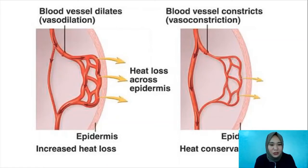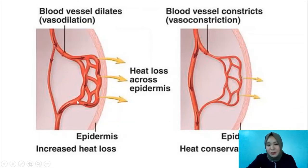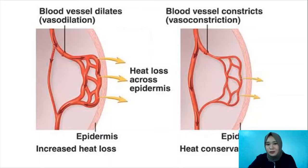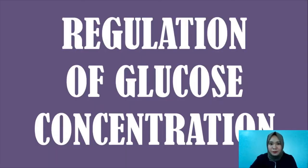When blood vessels dilate, the blood flows faster, which also means heat is released more quickly from the surface of the skin — that's one of the responses used to regulate high internal body temperature. When there is vasoconstriction, the blood vessels narrow, the blood flow slows down, and the heat within the blood is conserved and delivered to the different parts of the body.